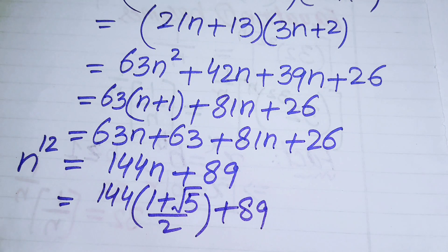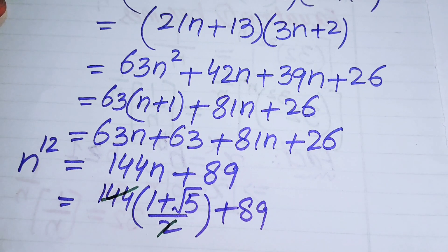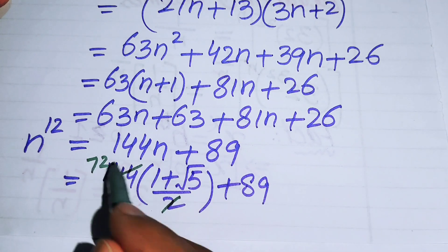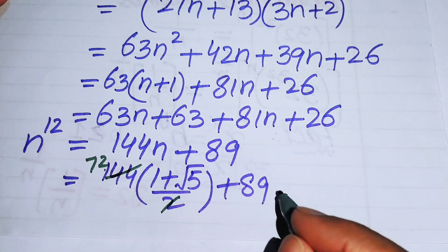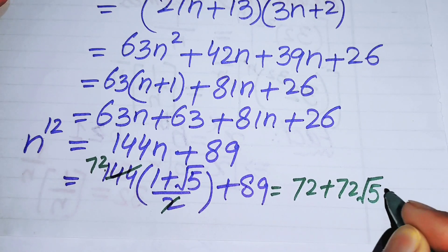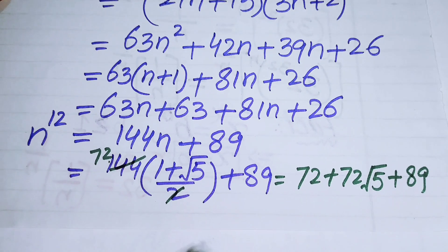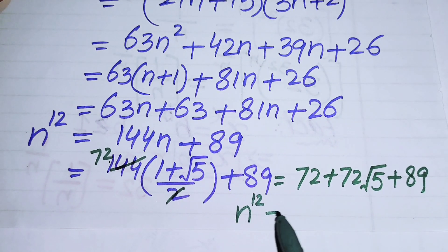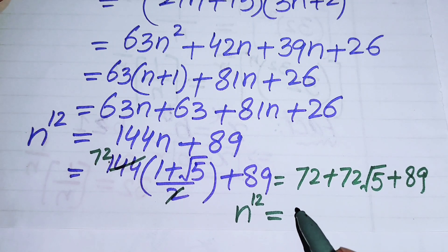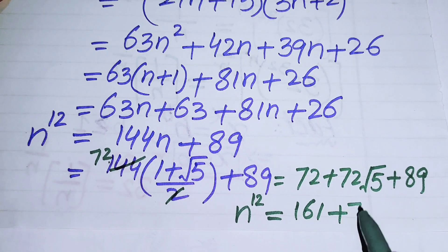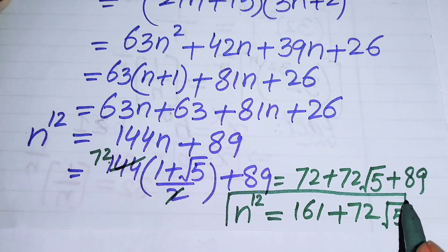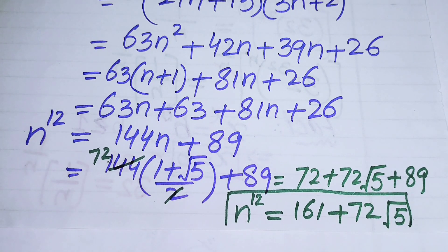Substituting: 144 · (1 + √5)/2 + 89 = 72(1 + √5) + 89 = 72 + 72√5 + 89. Adding constants: 72 + 89 = 161. Therefore, n¹² = 161 + 72√5. This is the final answer.